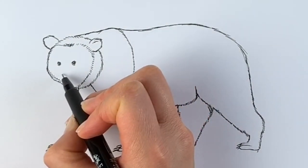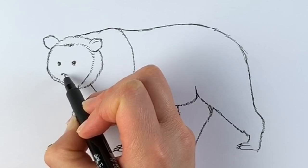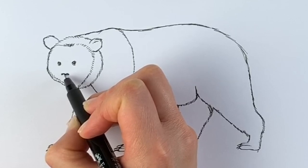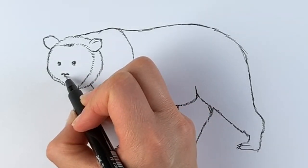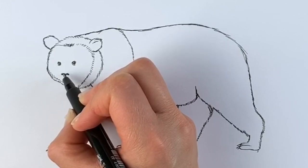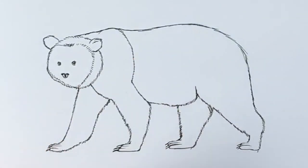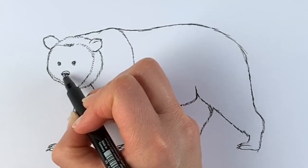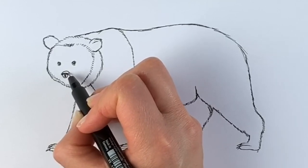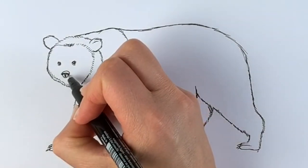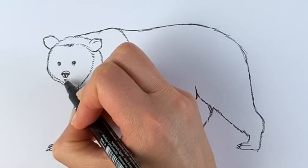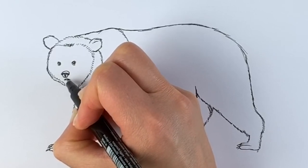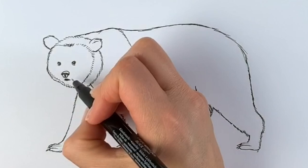So next is going to be the nose. So the nose is going to actually come down a bit more, like this, like that. And then that's the nose. And underneath is going to be the mouth, like this. Okay.